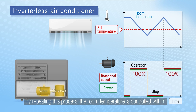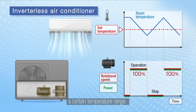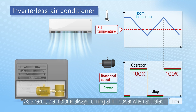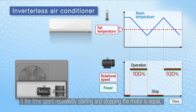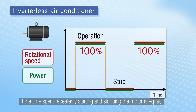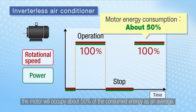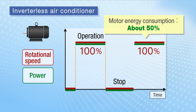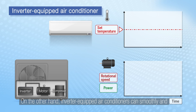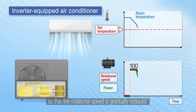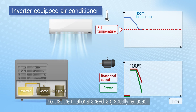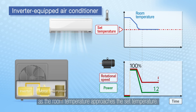By repeating this process the room temperature is controlled within a certain temperature range. As a result the motor is always running at full power when activated. If the time spent repeatedly starting and stopping the motor is equal, the motor will occupy about 50% of consumed energy on average. On the other hand, inverter-equipped air conditioners can smoothly and precisely control the rotational speed of the motor so that the rotational speed is gradually reduced as the room temperature approaches the set temperature.